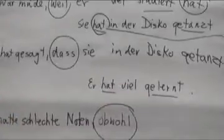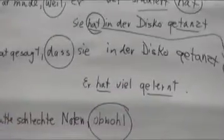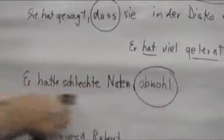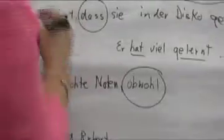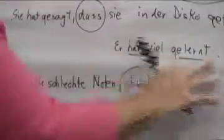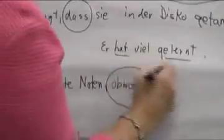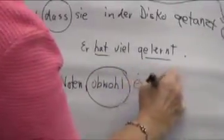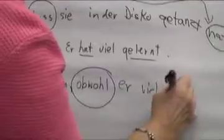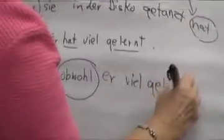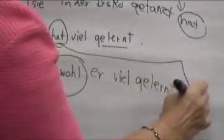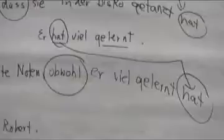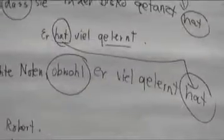One more: 'Er hat viel gelernt' — he has learned a lot. 'Er hatte schlechte Noten' — he had bad grades, even though he studied a lot. It happens sometimes, if it's a difficult concept. So let's put that original sentence into the subordinating clause: 'obwohl er viel gelernt hat.' It's not hard, you just have to remember — that's all there is to it.